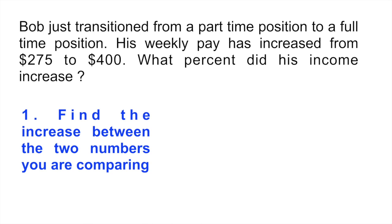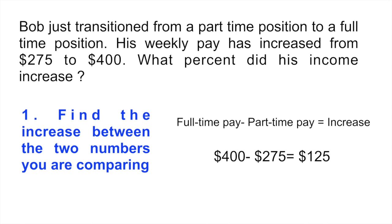So for these problems you have to follow three steps and I always recommend that you follow the same system so that you don't get confused. The first thing would be to find the increase between the two numbers that you're comparing, in this case the pay. So we would take the full-time pay which is $400 minus the part-time pay. That gives us an increase of $125.